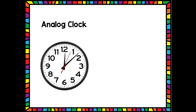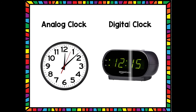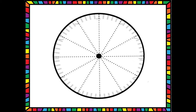First, let's talk about the difference between an analog clock and a digital clock. This is what an analog clock looks like — this is the typical type of clock that you would see hanging on the wall or on a watch. This is the traditional type of clock. A digital clock is where you see the numbers laid out for you — you would see it on an oven or a microwave, in a car, places like that.